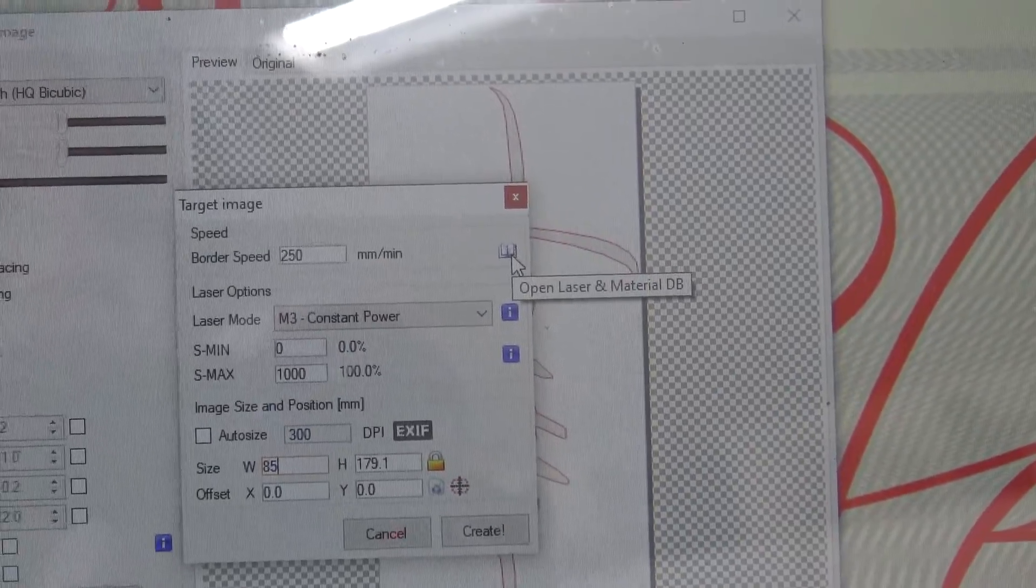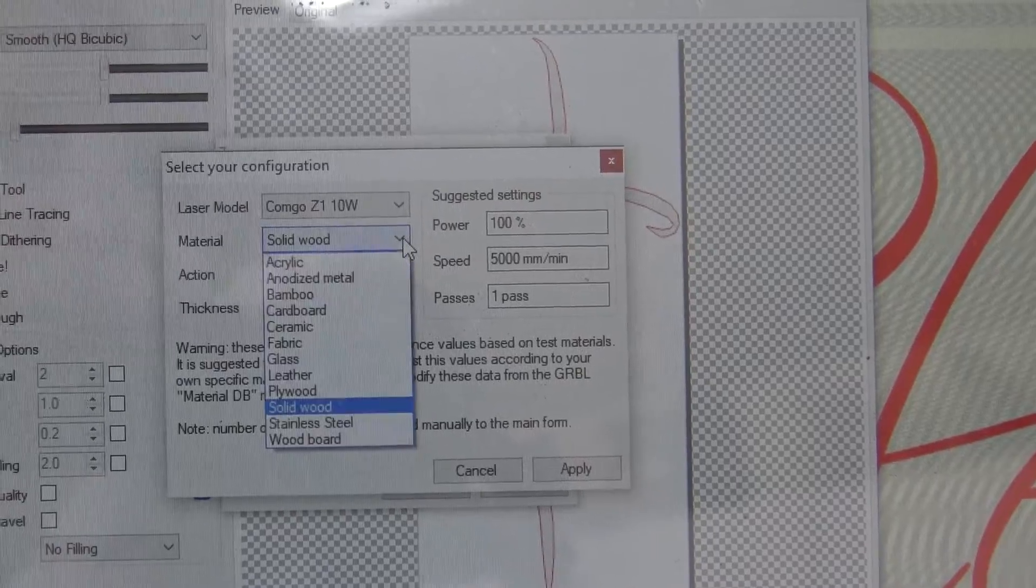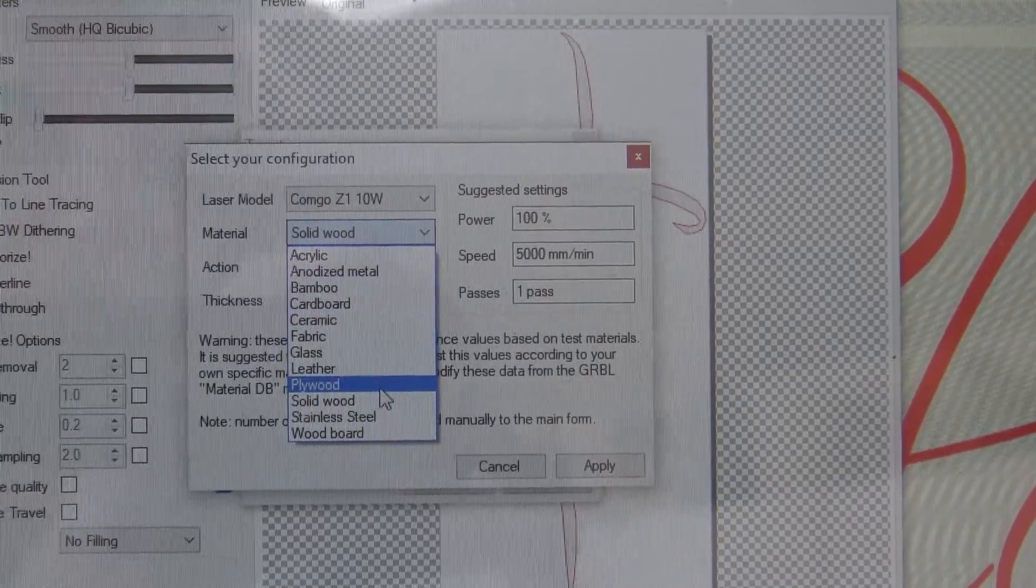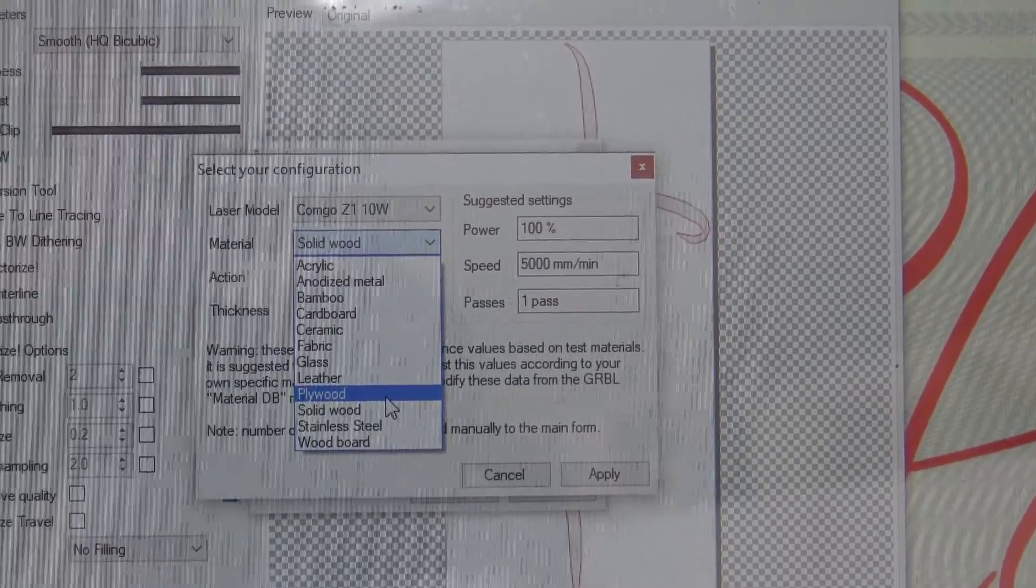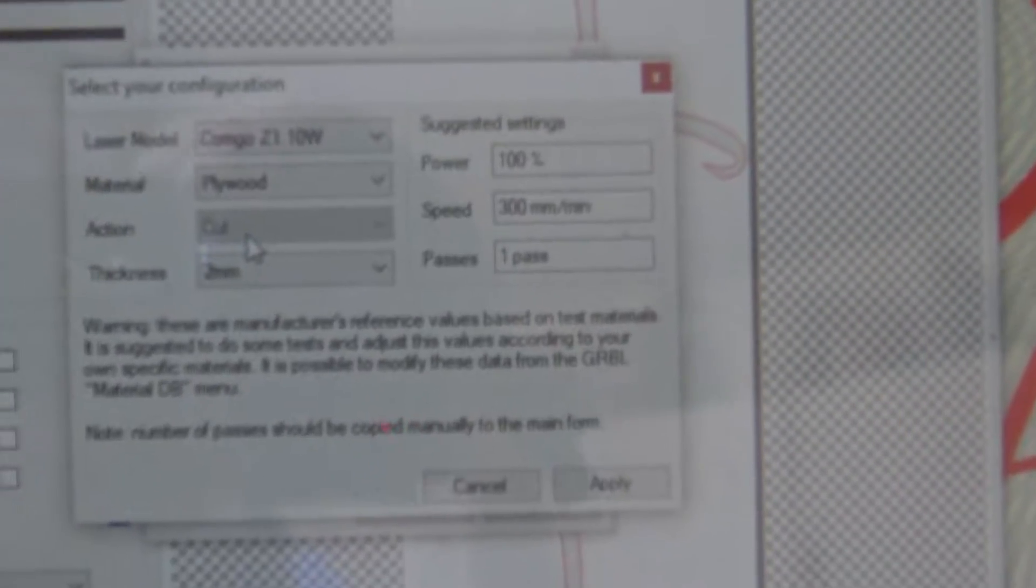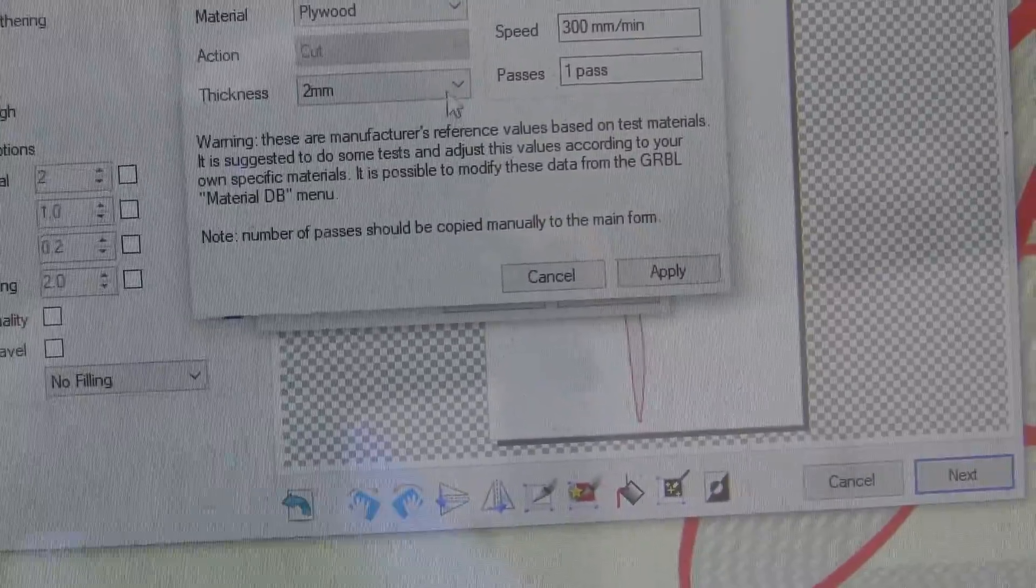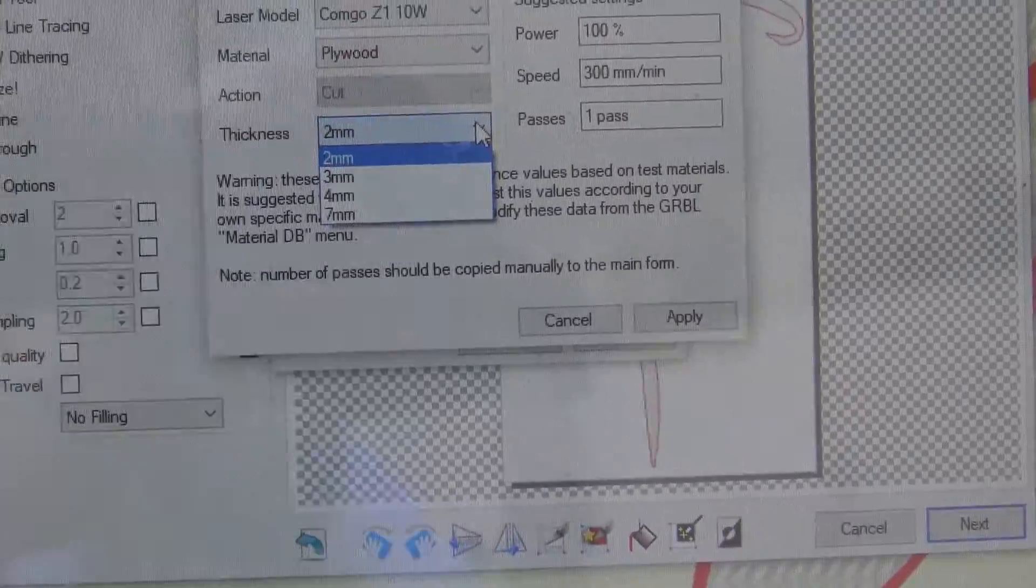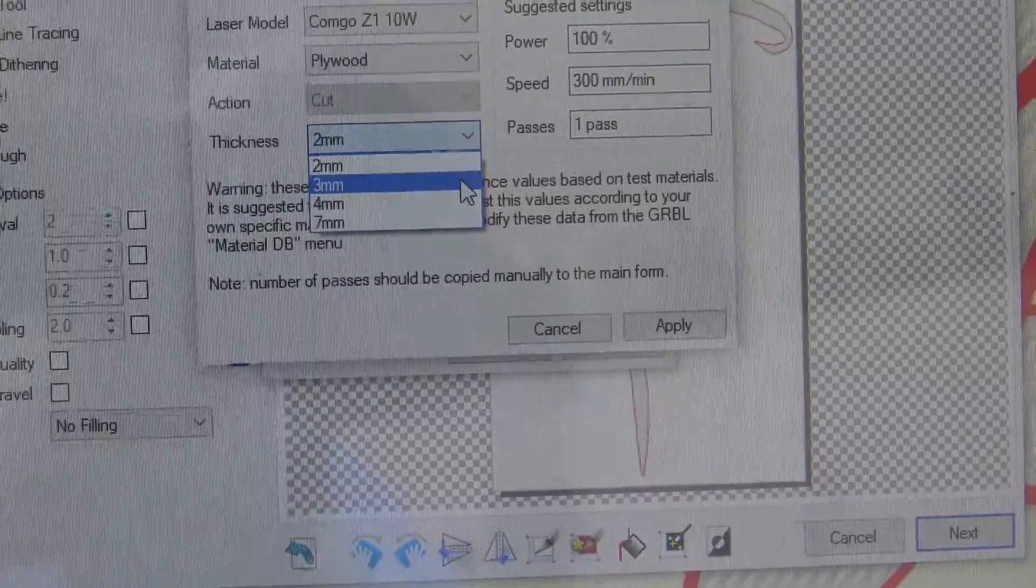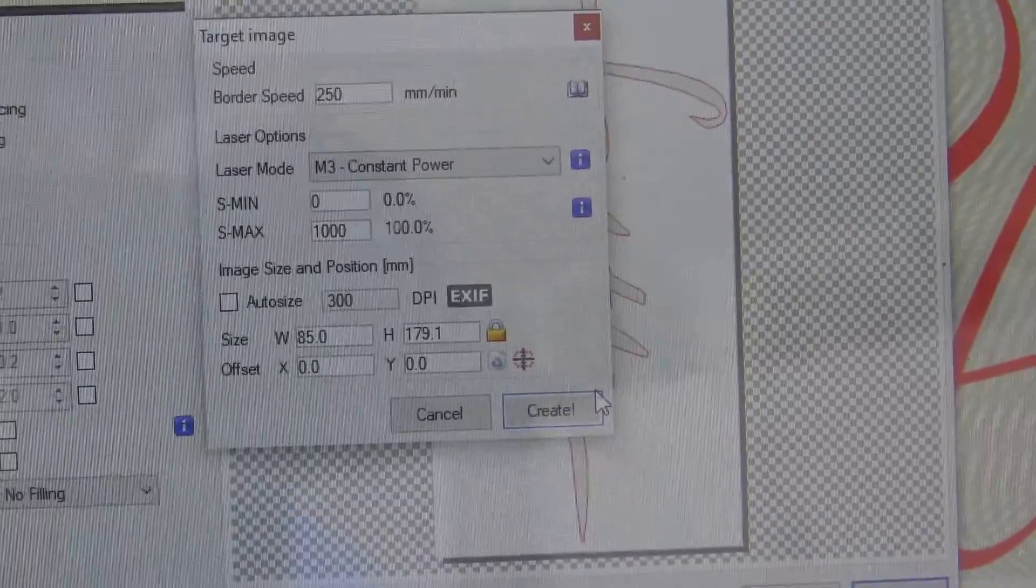So now this is the laser software. You open up this to find out what kind of wood you are going to be using. So if I'm going to be cutting this out, I'm going to tell it to do plywood. In this little gray box there, you can see it says cut. And the thickness is two millimeters. I'm going to tell it that I'm doing a three millimeter piece of wood. And I'm going to hit apply and create. And then the software is ready to go.